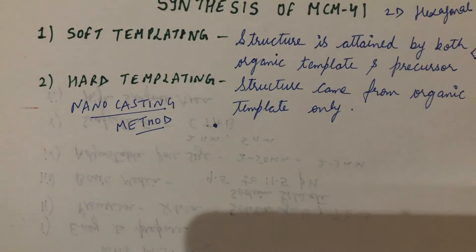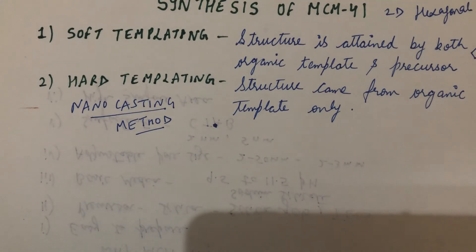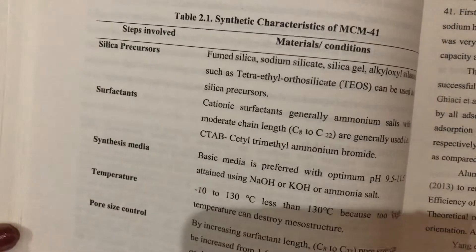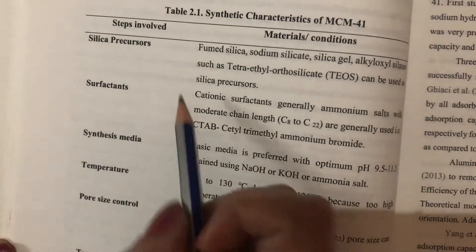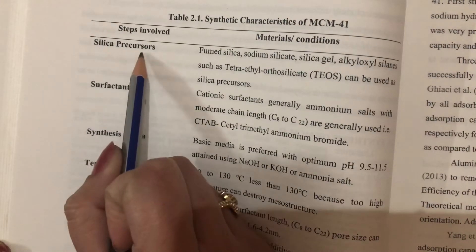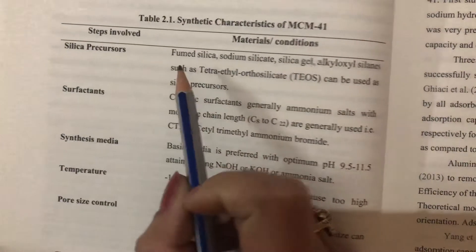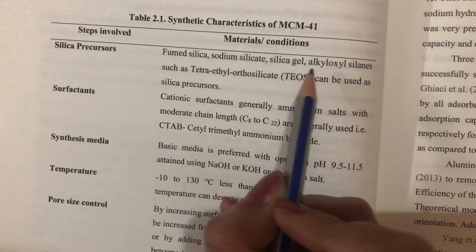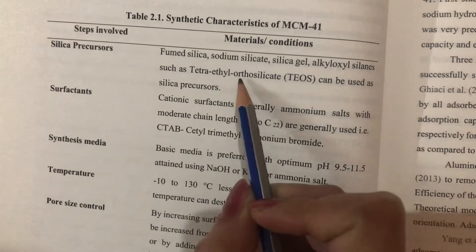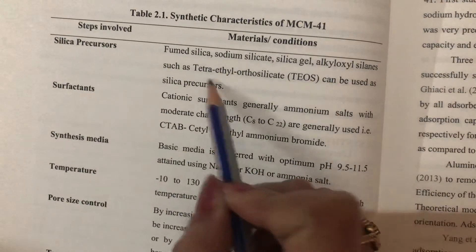Coming back to MCM-41, we need two things. I have made a table from my thesis summarizing the different materials required for its synthesis. First, we need silica precursors: these can be fumed silica, sodium silicate, silica gel, or alkoxysilanes such as tetraethyl orthosilicate (TEOS).